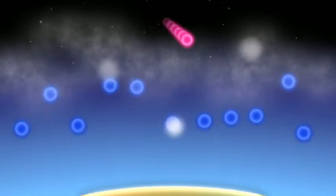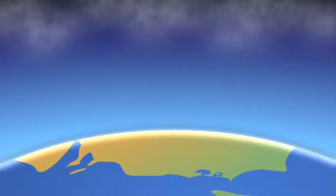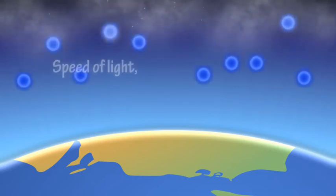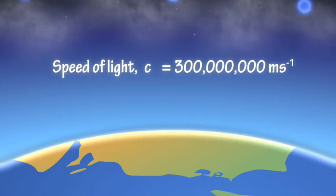And one of the byproducts of these collisions are high-energy muons traveling at relativistic speeds. By relativistic speeds, we mean speeds that are close to the speed of light, c, which is around 300 million meters per second.